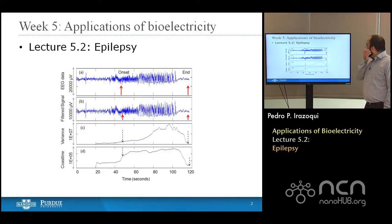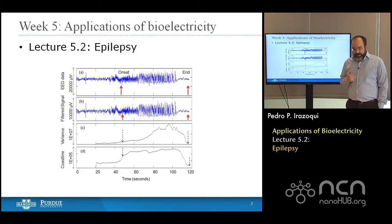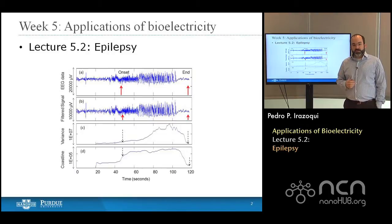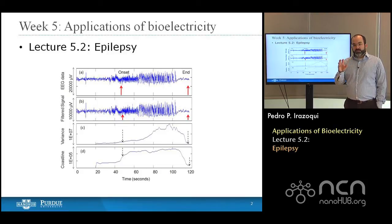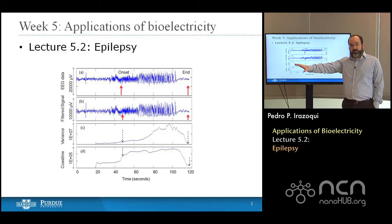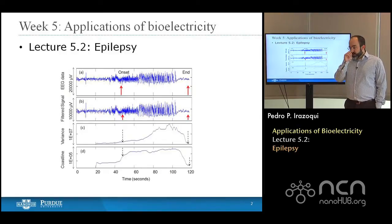Epilepsy is a disorder sometimes characterized as a lack of inhibition in the brain that leads to an excess of excitation. Uncontrolled or paroxysmal depolarizing shifts in neurons in the brain lead to uncontrolled, synchronized excitation across large neuronal populations that should not be synchronized. Areas of the brain that are unrelated begin to fire together in unison, and that's what we characterize as an epileptic seizure.